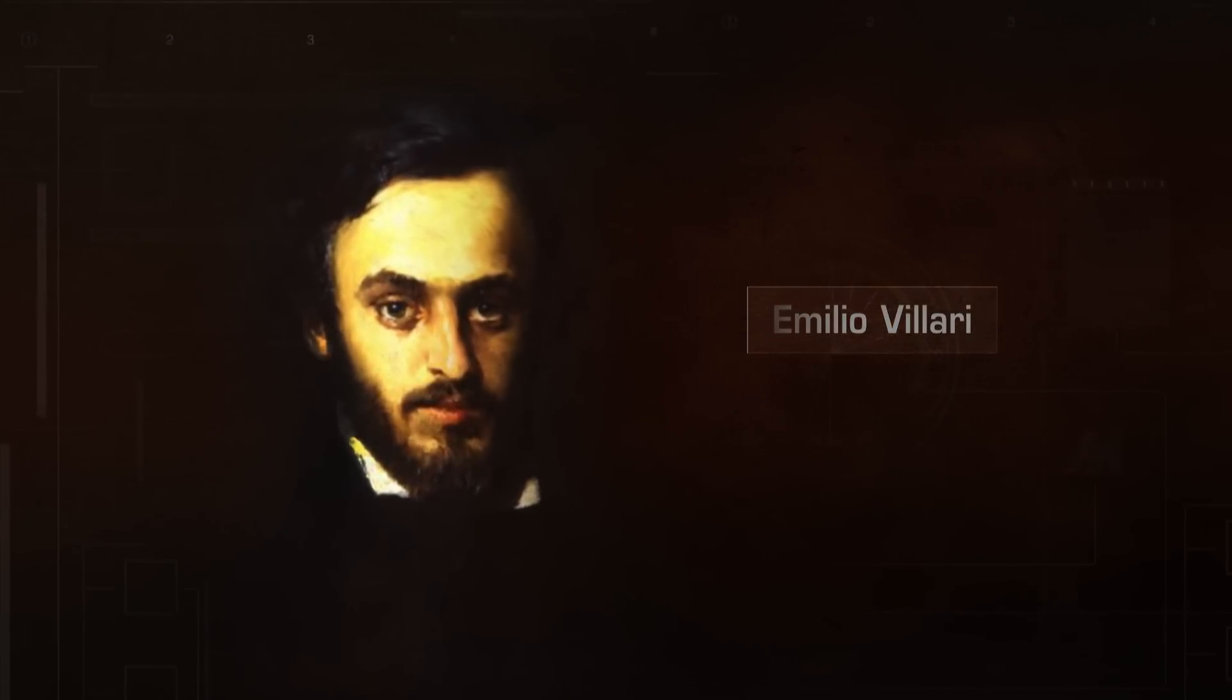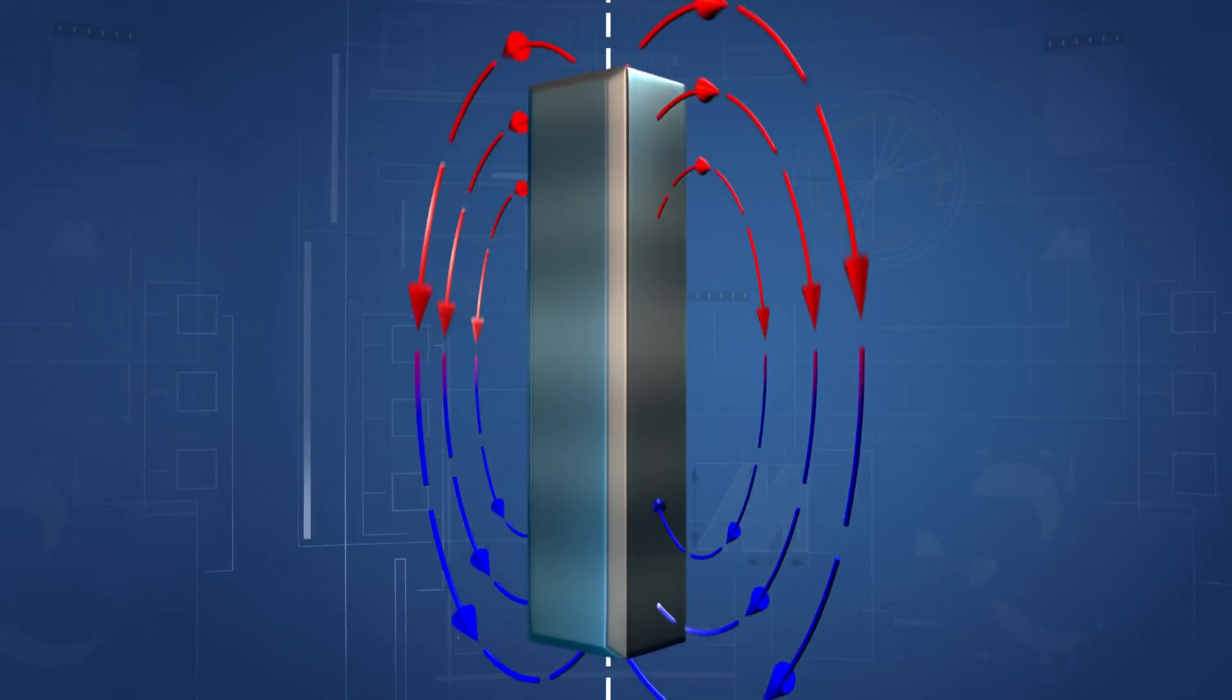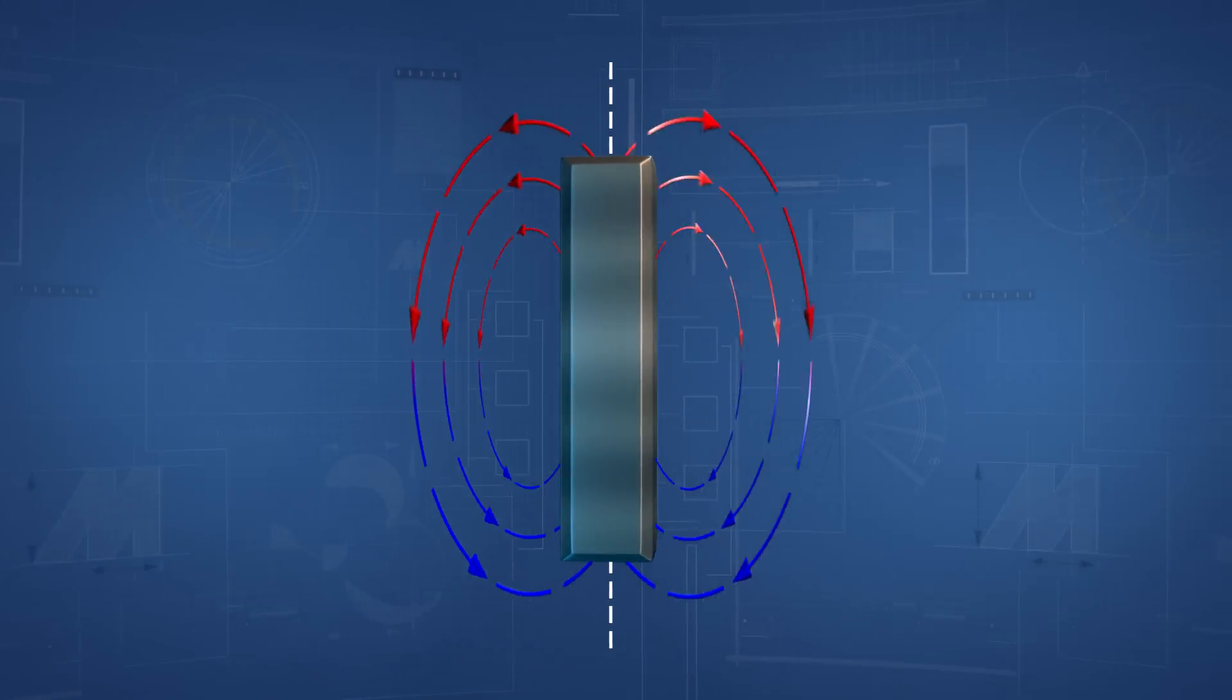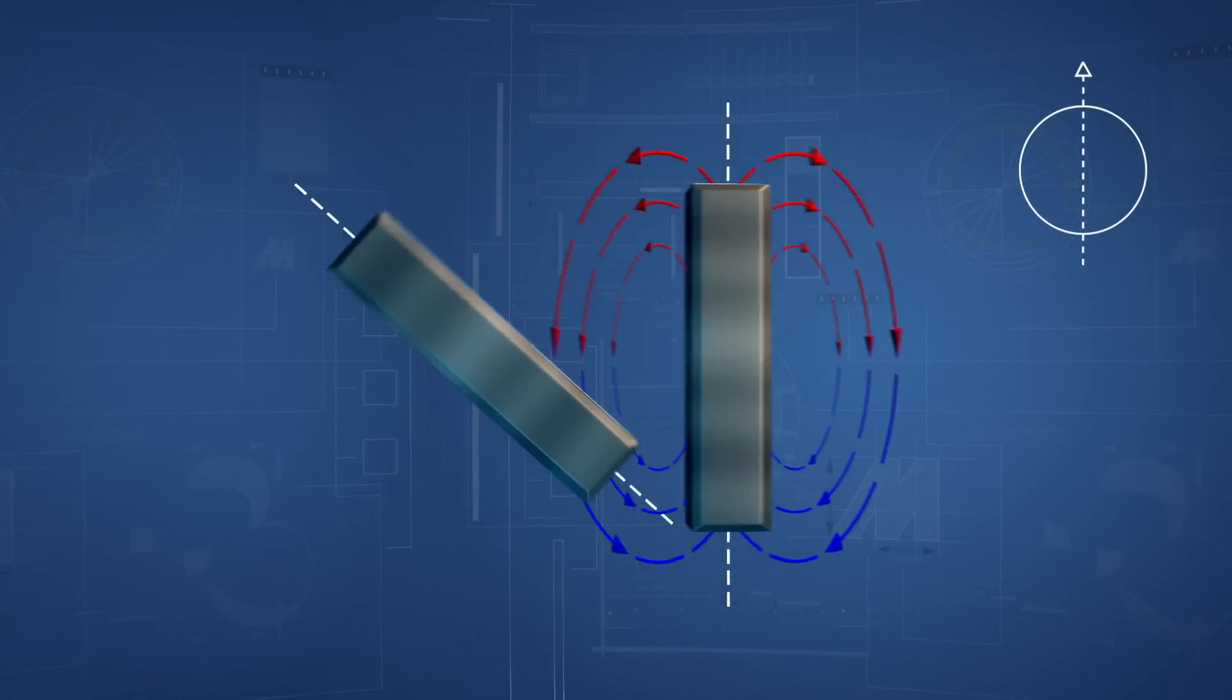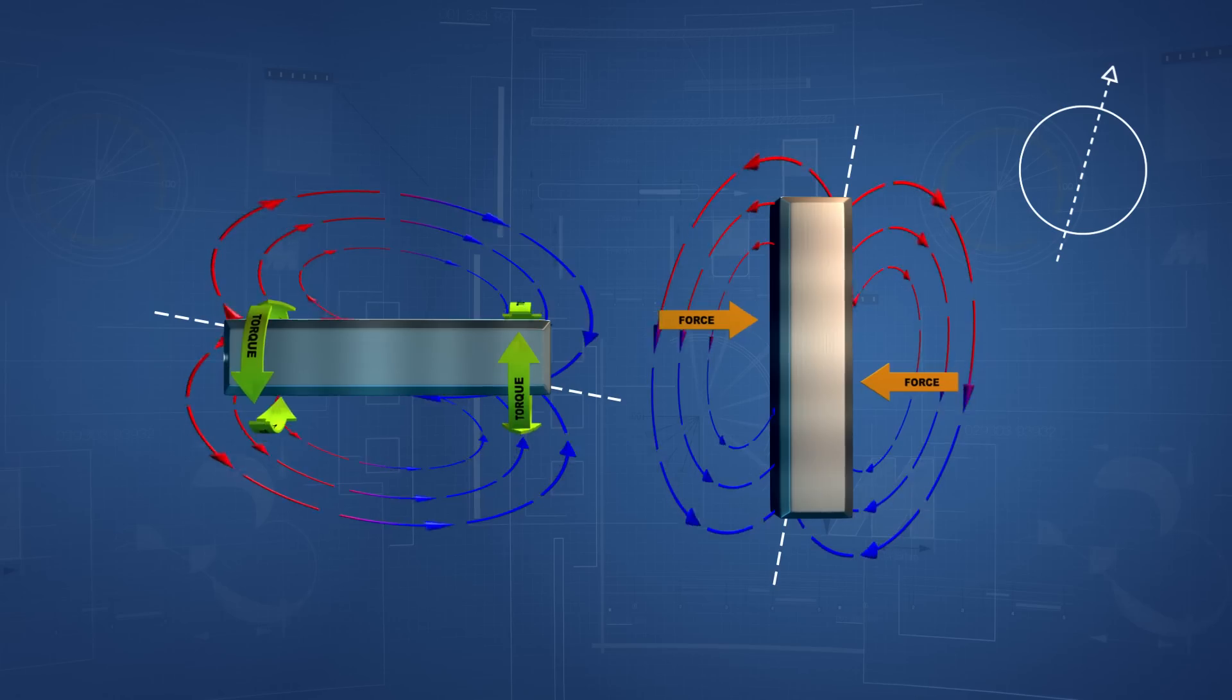Emilio Villari, an Italian physicist in the 19th century, discovered that if one applies any form of mechanical stress to a ferromagnetic material, be it torque or force, this causes a change in the natural magnetic flux.